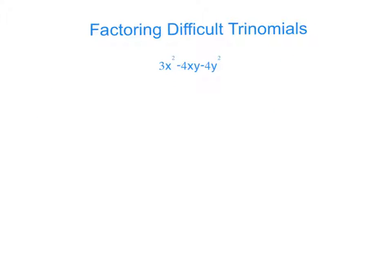Our last example, we're going to use foolproof factoring method. So what we have to do is we have to multiply a and c. So we get negative 12x squared y squared. Right now, we're not going to focus on the variables because we know the variable is going to be x, y.